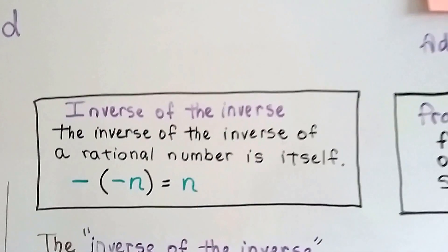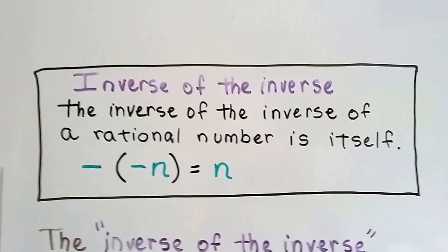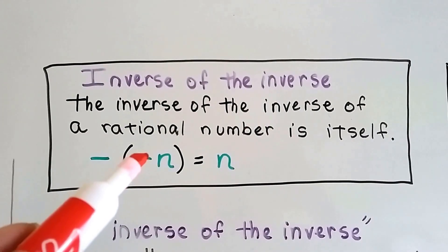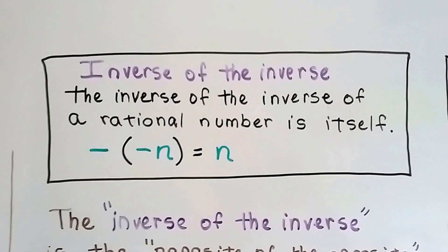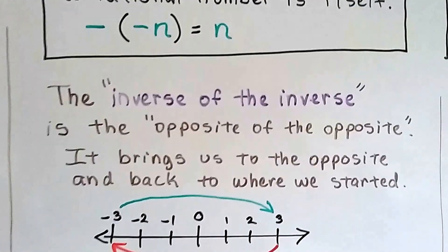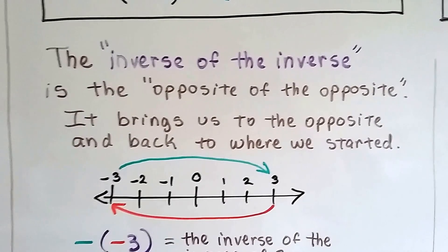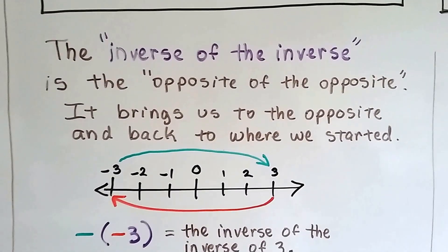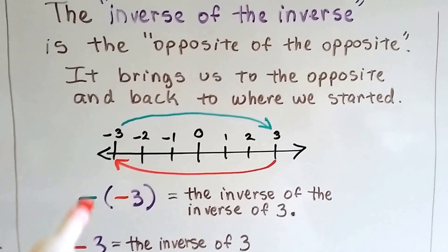The inverse of the inverse of a rational number is itself. The inverse of an inverse of n brings us back to n. The inverse of the inverse is like the opposite of the opposite — it brings us to the opposite and back to where we started again.